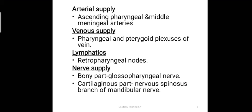The arterial supply is from the ascending pharyngeal and middle meningeal arteries. Venous drainage is through the pharyngeal and pterygoid plexuses. Lymphatics drain to the retropharyngeal nodes. The nerve supply differs for each part: the bony part is supplied by the glossopharyngeal nerve, while the cartilaginous part is supplied by nervus spinosus, a branch of the mandibular nerve.